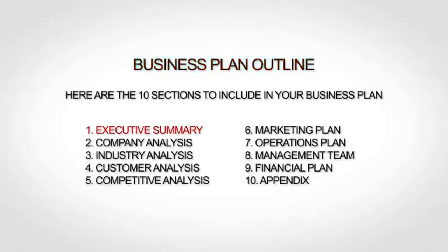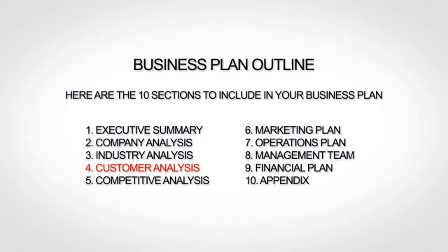The first section is your executive summary, which is essentially the introduction to your business plan. The next section is your company analysis, which gives a little more background. Next up is your industry analysis, where you talk about your market and trends. The fourth section is your customer analysis, where you go more in depth about your target market. The fifth section is your competitive analysis, where you provide an analysis of your competition including what differentiates you from your competitors.